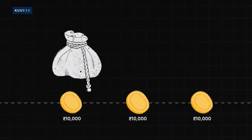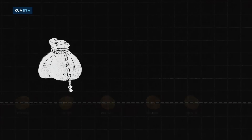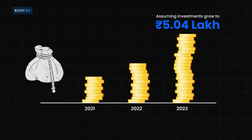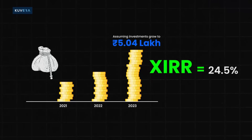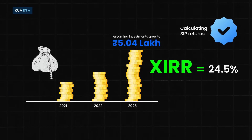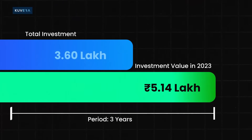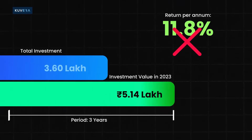If you start an SIP of Rs 10,000 and after 3 years your investments would have grown to Rs 5,04,000, your XIRR returns would amount to 24.5%, and this is the correct way to calculate your SIP returns. Whereas, calculating absolute returns from your investments for 3 years without taking into account the different time intervals would give you a return of only 11.8%.